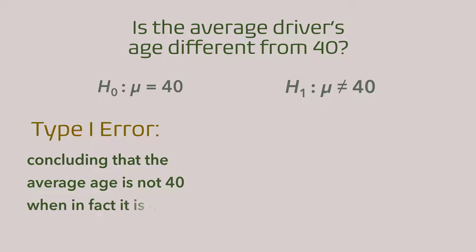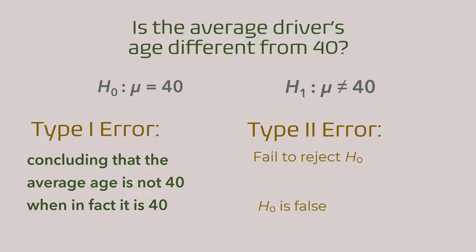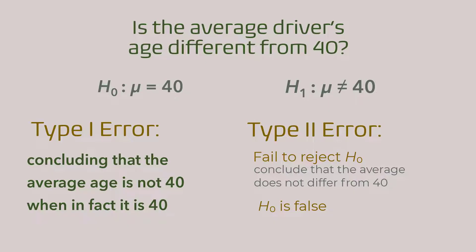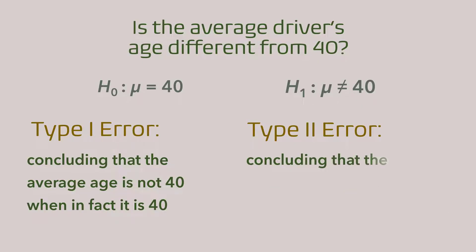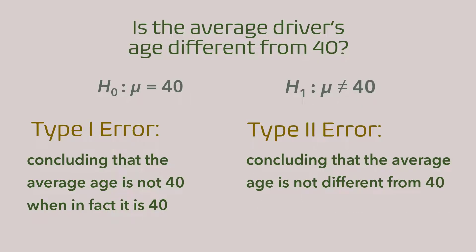For the type 2 error — that is, not rejecting a false null hypothesis — not rejecting the null hypothesis means that we did not conclude that the average age differs significantly from 40. And the null hypothesis being false means that the average age is indeed different from 40. So the type 2 error here is concluding that the average age is not different from 40, when in fact it is different from 40.